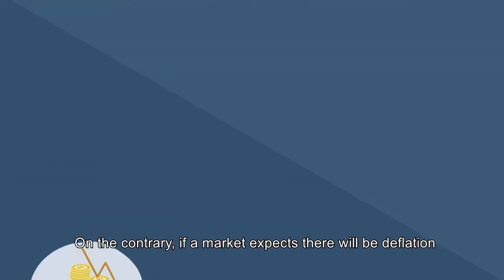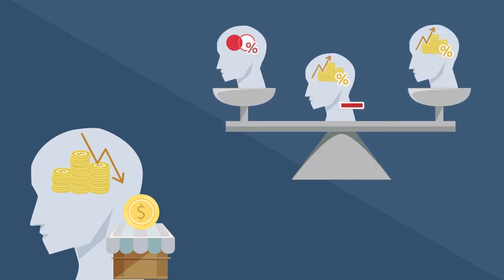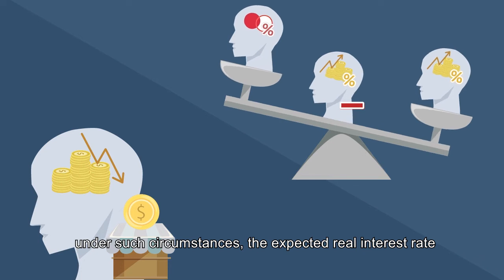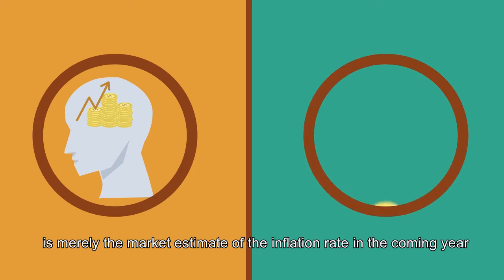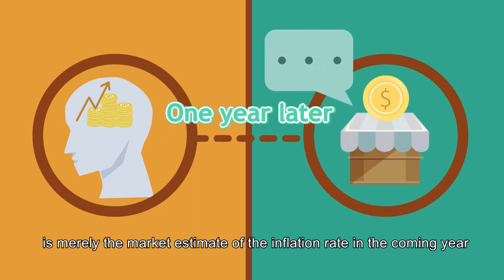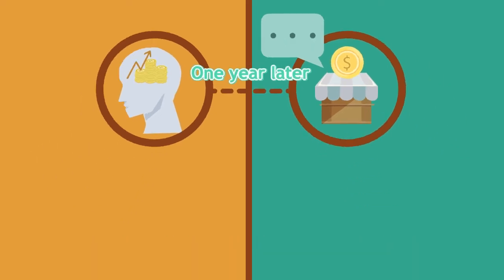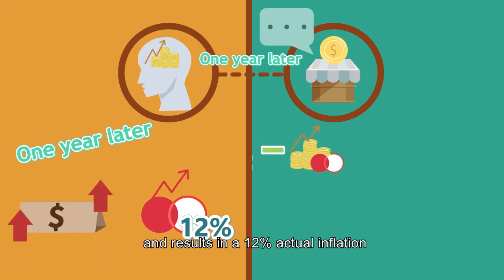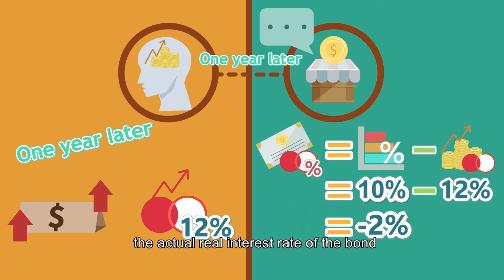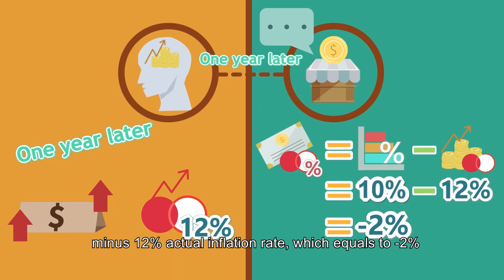On the contrary, if a market expects deflation, the expected rate of inflation will be negative. Under such circumstances, the expected real interest rate will be higher than the nominal interest rate. However, the expected rate of inflation is merely the market's estimate, and the actual inflation rate may differ. If the general price level greatly increases during the coming year resulting in a 12% actual inflation, the actual real interest rate of the bond will equal 10% nominal interest rate minus 12% actual inflation rate, which equals minus 2%.